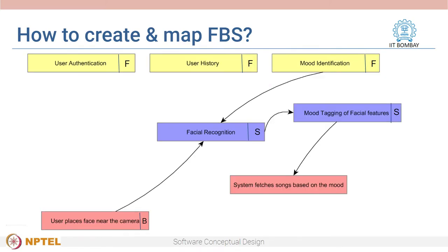In the next step, we can start thinking in terms of the end user as well as the system to generate behaviors. For example, a user would place the camera to automatically start playing songs. The system could fetch a song list based on a particular mood, and so on. We then map all the structures that work together when a behavior happens, identifying structures and behaviors and mapping them.